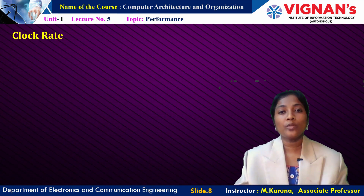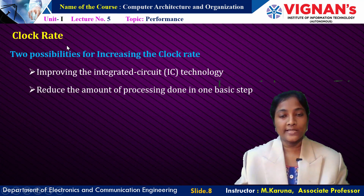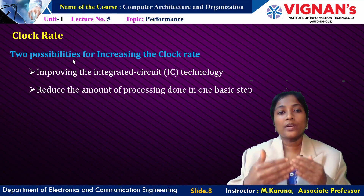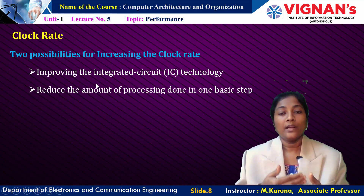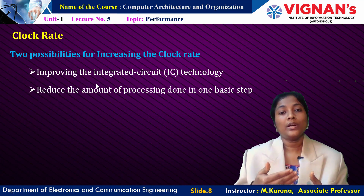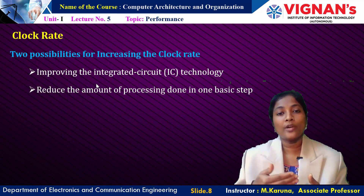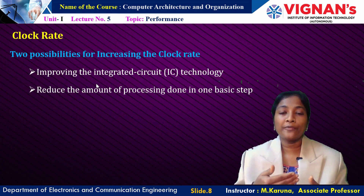Coming to clock rate: the clock rate is the inverse of the time duration of the machine cycle. There are two possibilities to increase the clock rate. First, if you reduce the time period of the machine cycle, the clock rate increases and the speed of operation improves. Also, fabrication of ICs — adder circuits, subtractor circuits, and logical circuits — using high-density VLSI technology increases the speed of operation, giving better performance of the system.